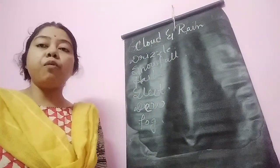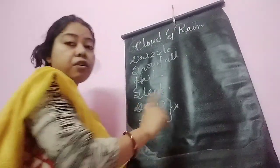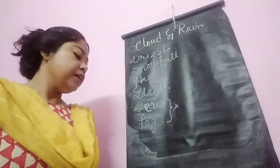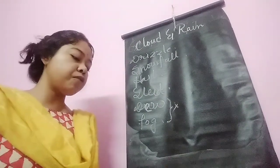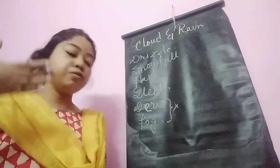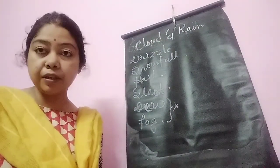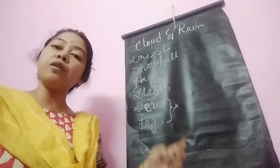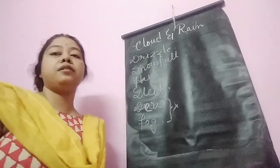Very important: why are dew and fog not considered as precipitation? Dew and fog do not form precipitation as they are not thrown down from the atmosphere to the earth surface. They are formed near the earth surface in the lower atmosphere, not coming from the atmosphere down. So dew and fog are not considered as precipitation.